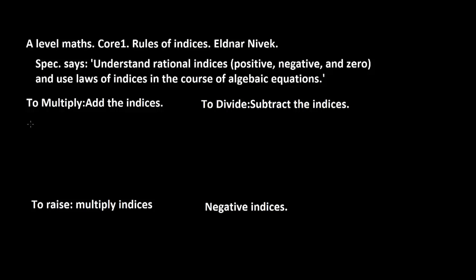The first thing we're going to look at is how to multiply indices. To multiply them, you actually add the indices. So if we've got a to the power m times a to the power m, we add the indices, giving us a to the power m plus m. We can show how that works — if we consider a squared times a cubed, we get a to the 2 plus 3, which is a to the 5.